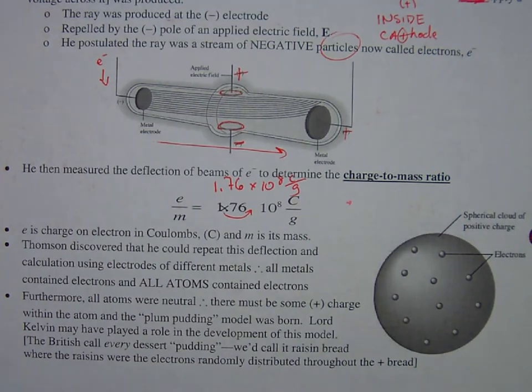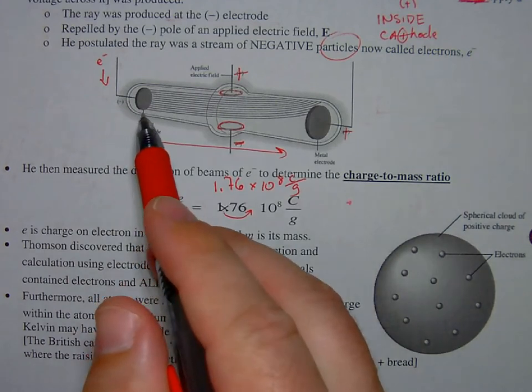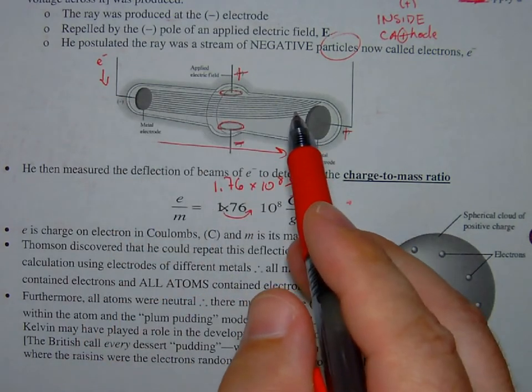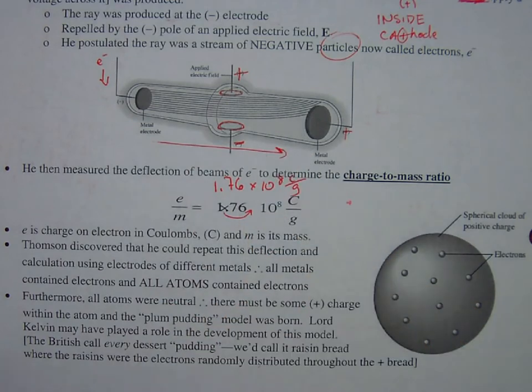And so what this means was the original metal that he observed this in wasn't the only thing that created this cathode ray. He would try it with copper, zinc, aluminum, gold - maybe not gold, gold's expensive. But he would throw all these different types of metal in there and he would see that this ray would be produced. And so that led him to conclude that all metals contained electrons, this ray of negatively charged particles.